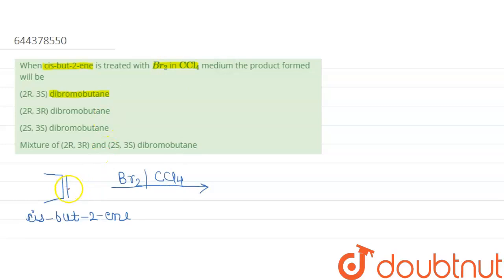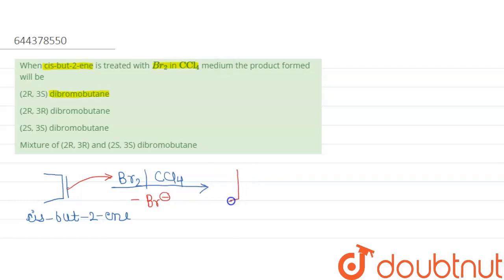The lone pair present on cis-2-butene attacks the bromine. One bromine is removed as Br⁻ in the first step, and a classical carbocation is formed. In the first step, Br attaches and a positive charge is present on the Br — this is your classical carbocation.